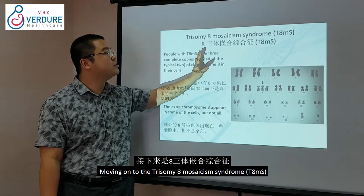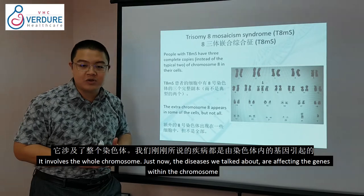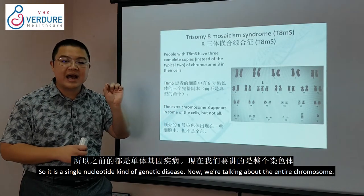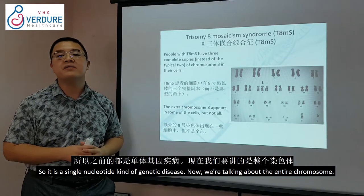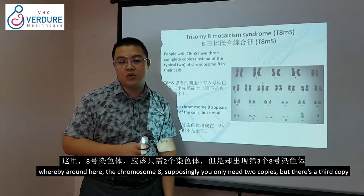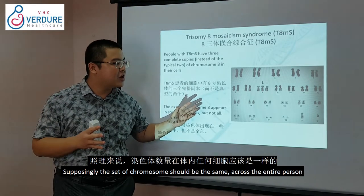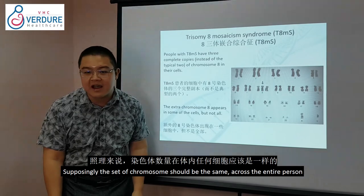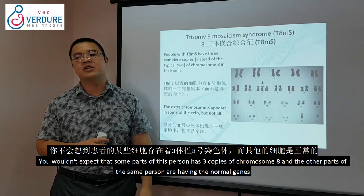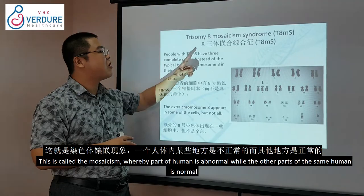Moving on to trisomy 8 mosaicism syndrome, which involves the whole chromosome — not just a single gene. Normally you need 2 copies of chromosome 8, but here there is a 3rd copy. What makes it interesting is that only part of that person has 3 copies, while another part of the same person has a normal set of chromosomes. This is called mosaicism.